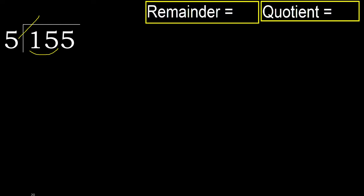But not greater. 5 multiplied by 4 is 20, 20 is greater. Multiply by 3: 15. 15 is not greater, so subtract. Next.